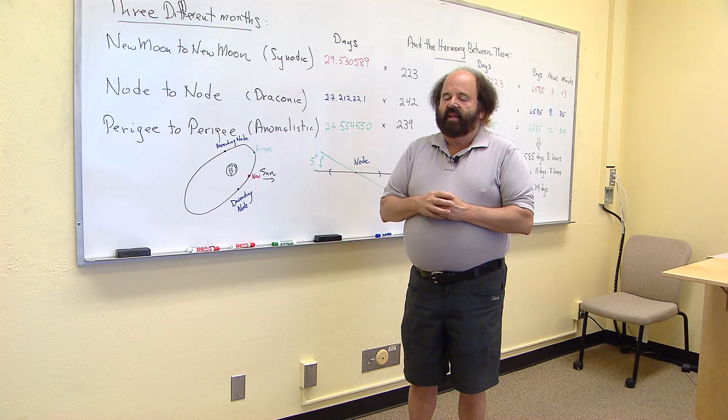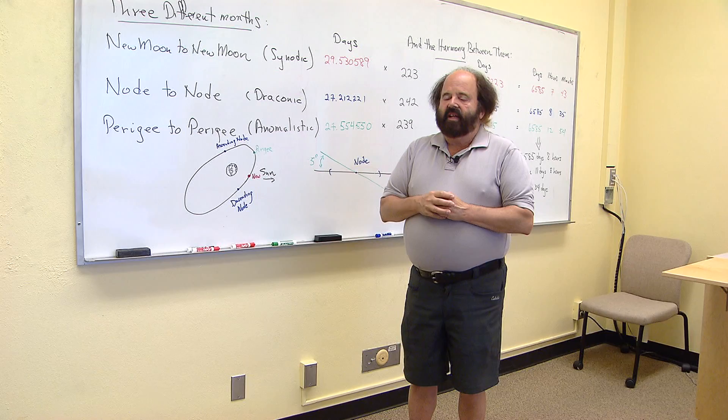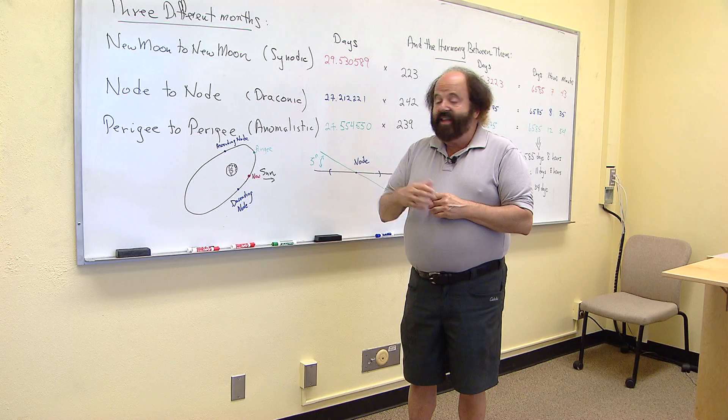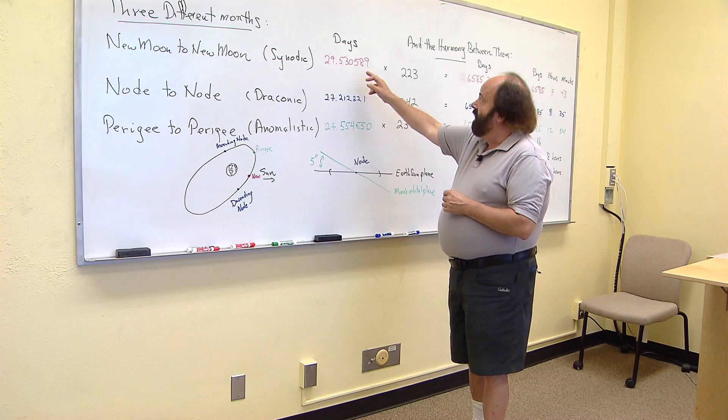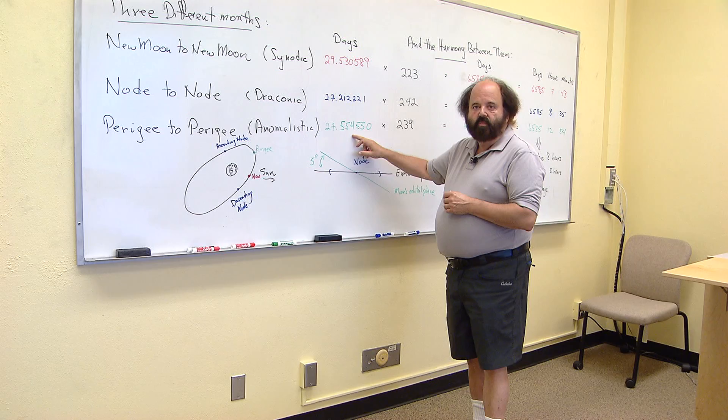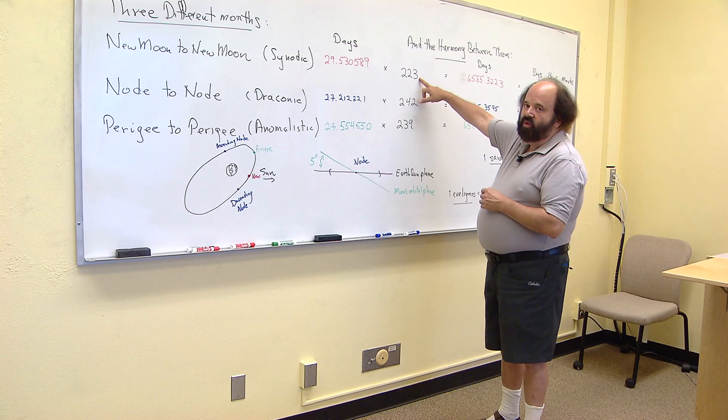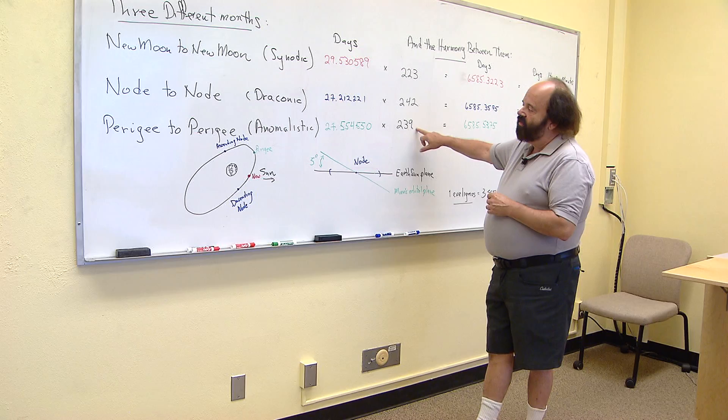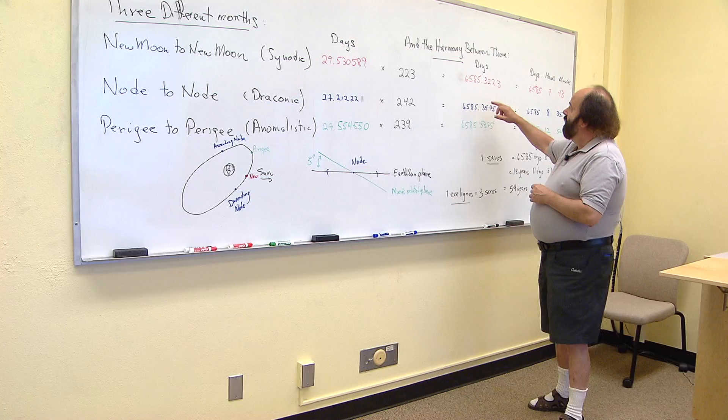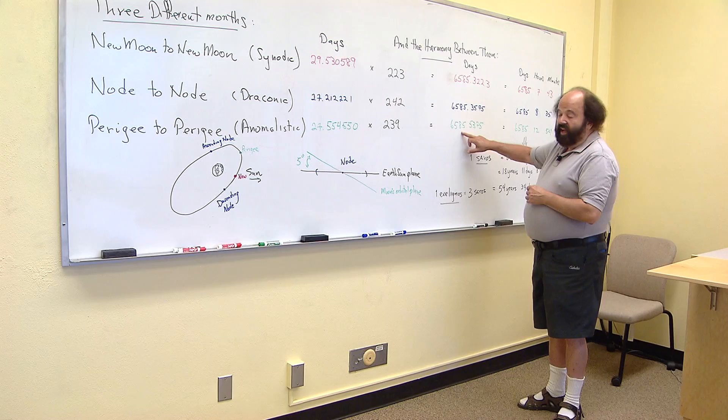Eclipses are actually quite common. There can be as many as seven in a given year. It just depends on their relative geometry. Now, once you know what is coming, it's easy to tell because of the music of the spheres, so to speak, when the next one in your area is going to show up. That's because these periods, these are the tones of the moon, if you will. These are the three notes the moon is making. This is its chord. Well, they have a rough least common multiple. In other words, if I take 223 new moons, 242 node moons, 239 perigee moons, well, son of a gun, that works out to be the same number of days and almost the same number of hours for all of those three multiples.